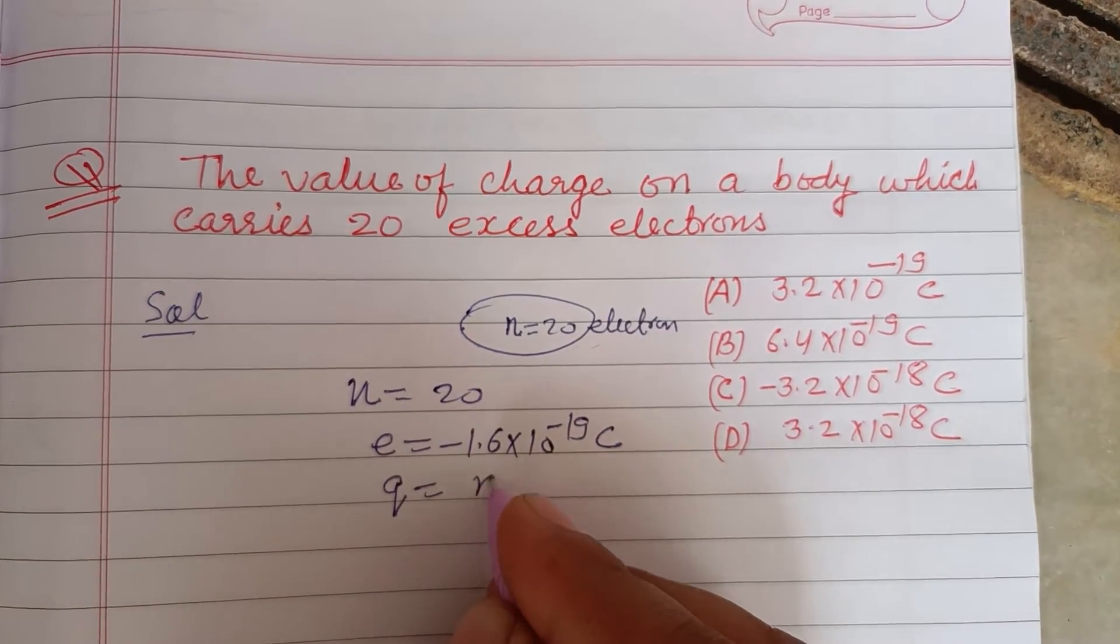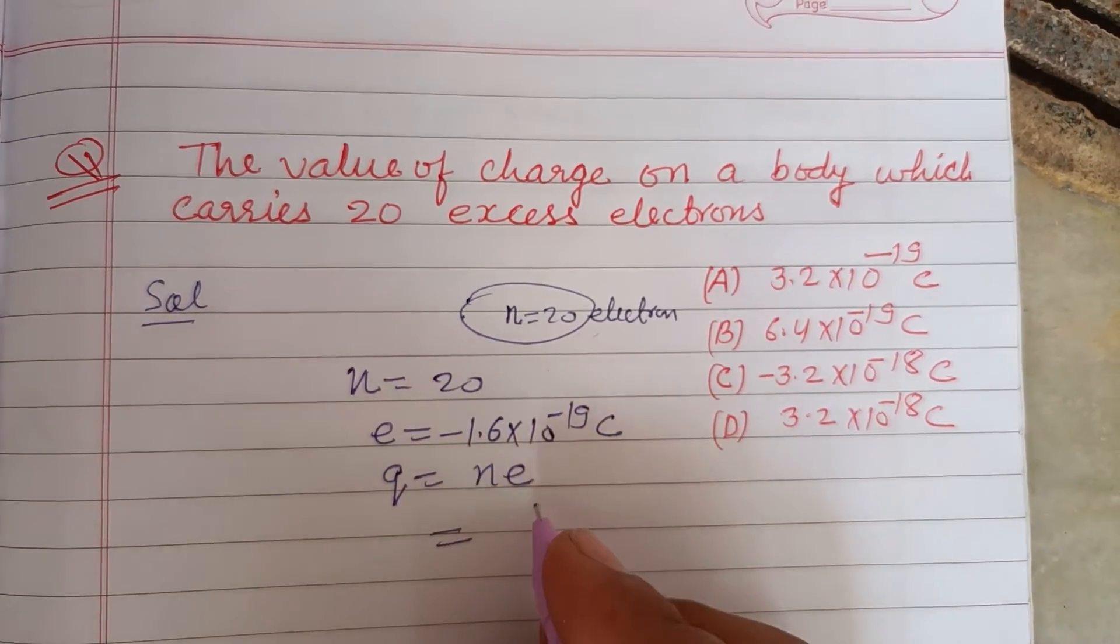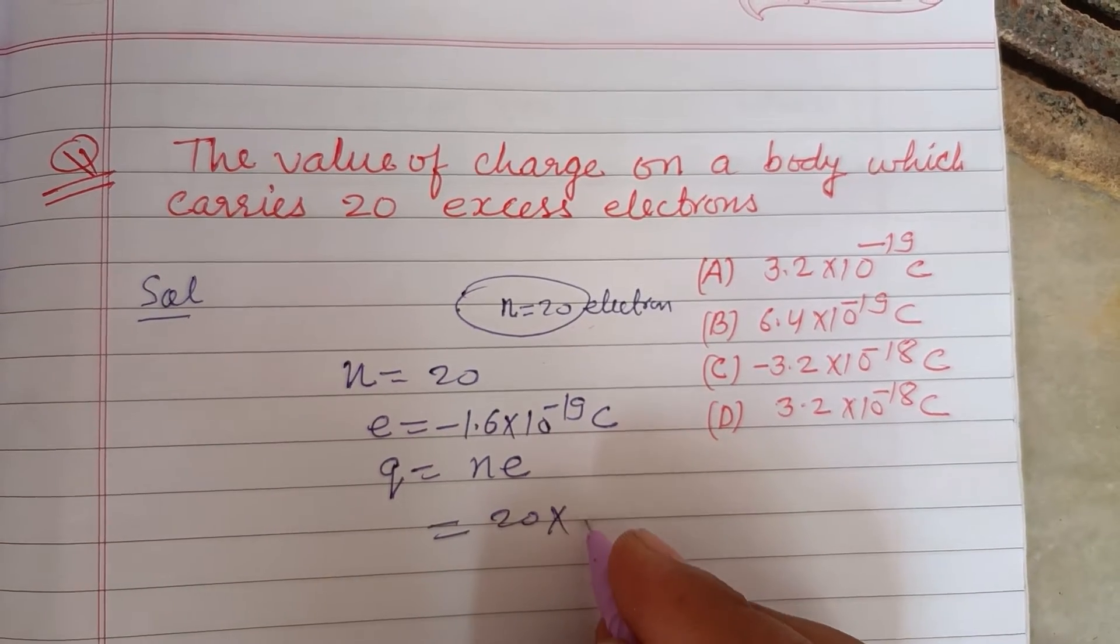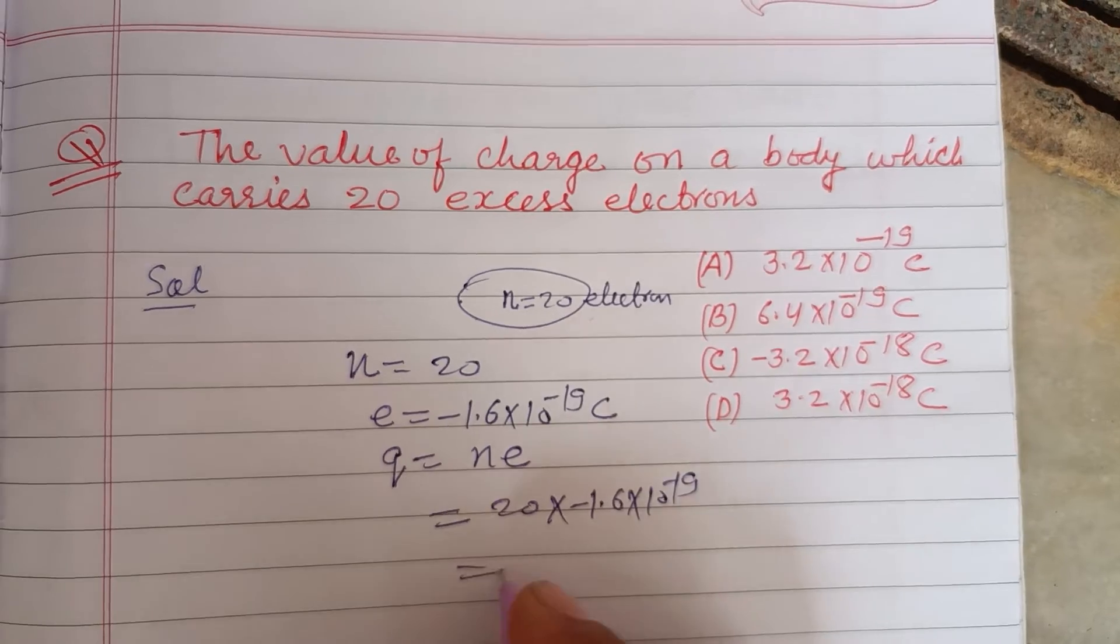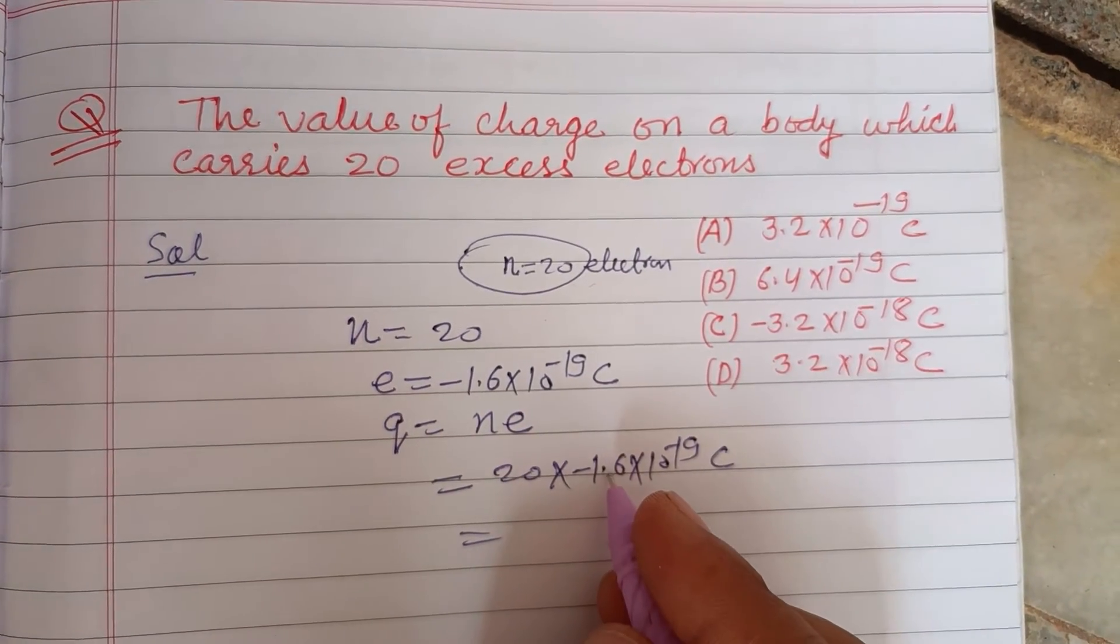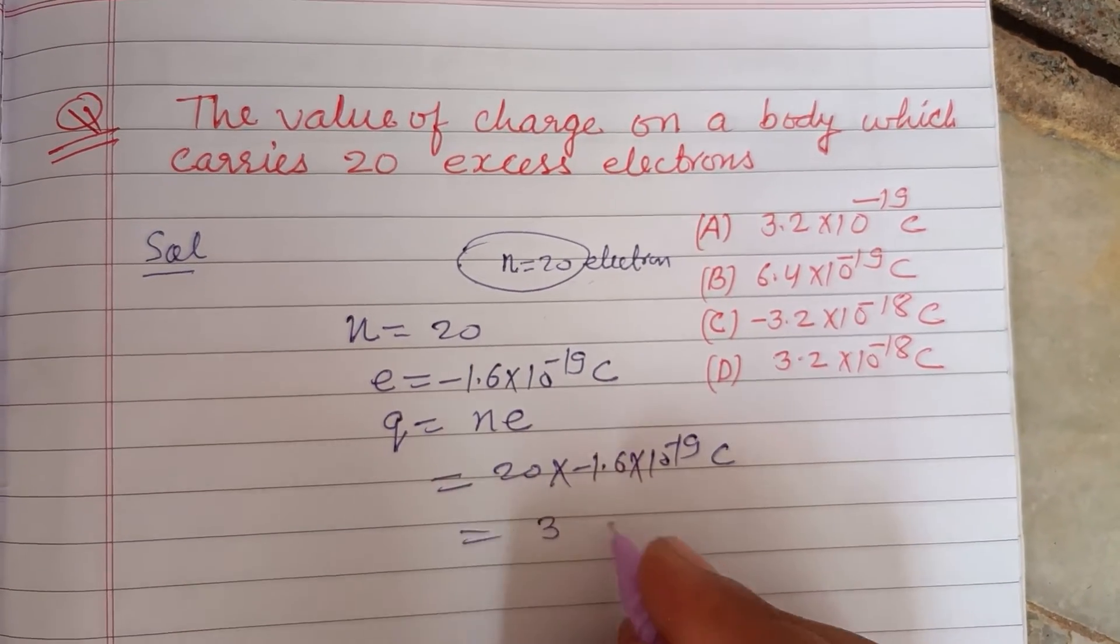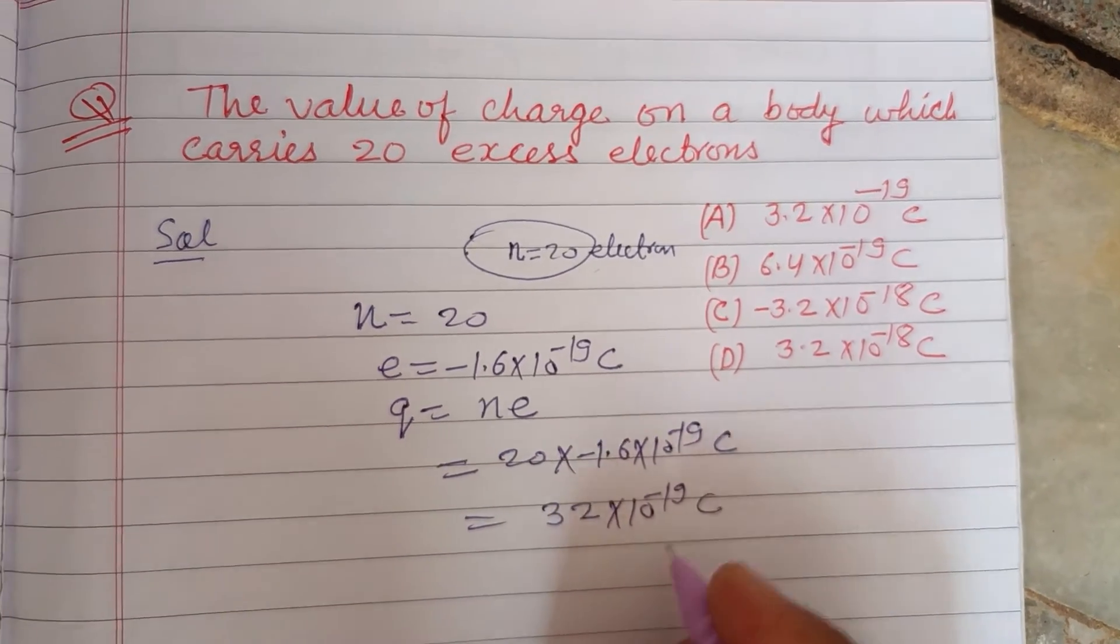on the body, q, equals n times e. So n is 20 here and e is minus 1.6 times 10 to the power minus 19 coulombs. So 20 times 1.6 equals 32 times 10 to the power minus 19 coulombs.